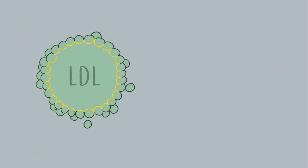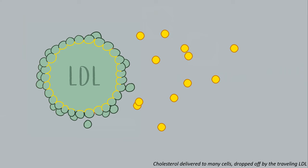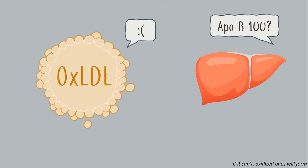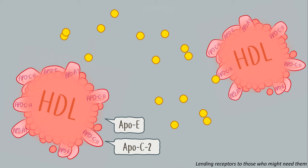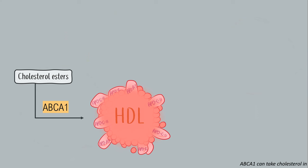Cholesterol delivered to many cells, dropped off by the traveling LDL. ApoB100 helps it return — if it can't, oxidized ones will form. HDL needed for so many reasons, lending receptors to those who might need them. It picks up cholesterol to take it back, and its ApoA1 activates the LCAT.